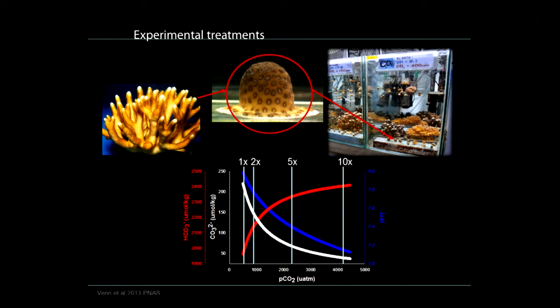We are working with Stylophora pistillata. We take branch tips about one centimeter in height, attach them to glass slides, and grow them under a range of CO2 conditions — from present-day CO2 up to twice, five times, and approximately ten times present-day atmospheric CO2.